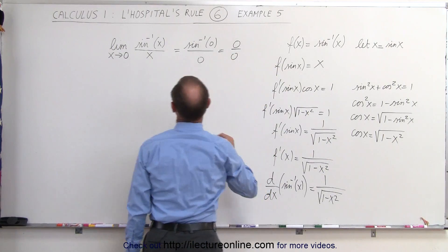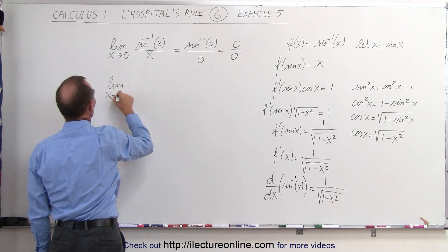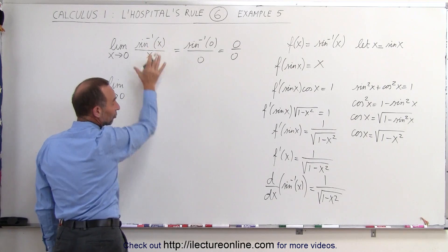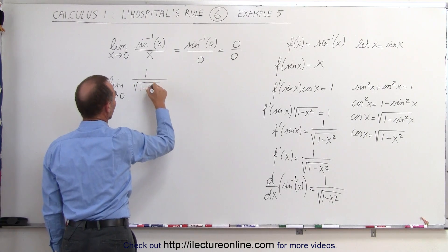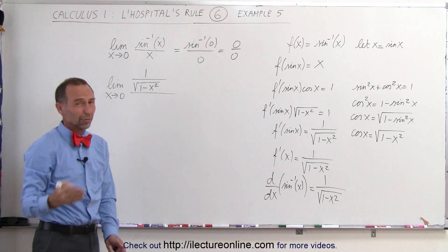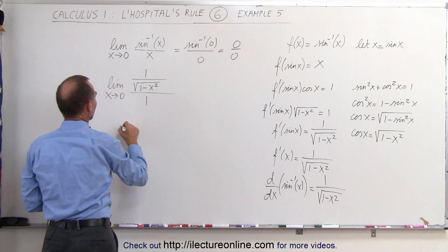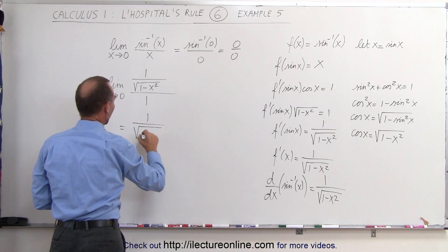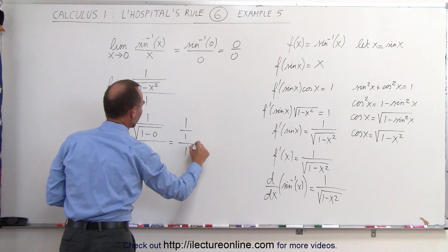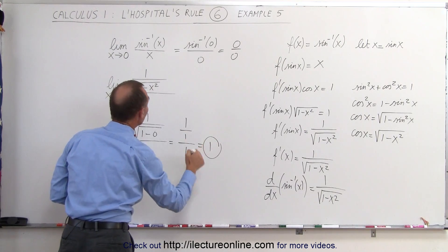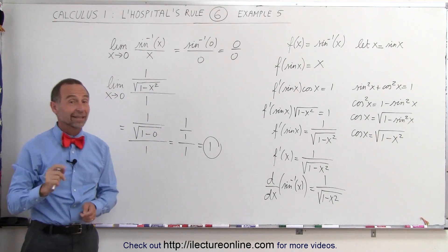We can now plug that in. Taking the derivative of both the numerator and the denominator, the limit as x approaches 0 of the ratio gives us 1 divided by the square root of 1 minus x squared, divided by the derivative of x, which is 1. Letting x approach 0, this becomes 1 divided by the square root of 1 minus 0, all divided by 1, which equals 1 divided by 1, divided by 1, which is simply 1. The limit of the inverse sine of x divided by x, as x approaches 0, is indeed 1. And that's how we do that.